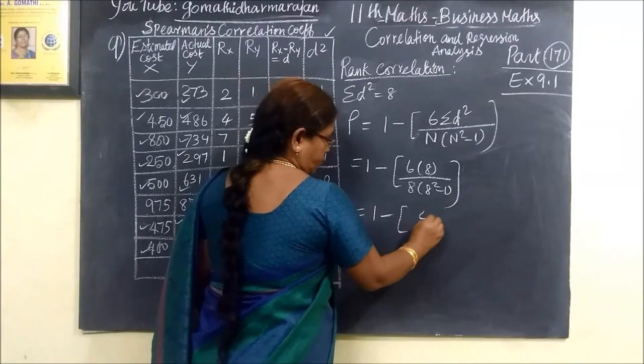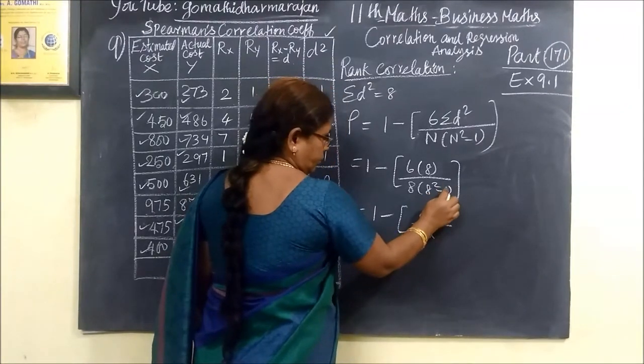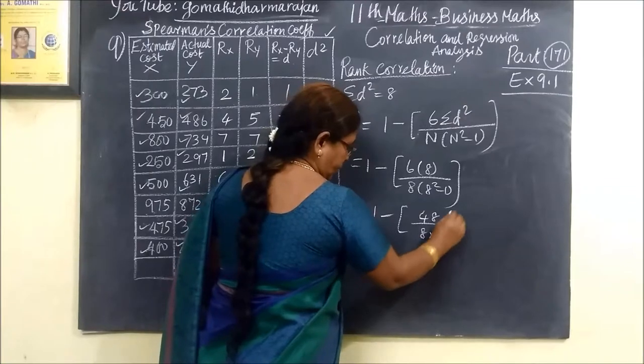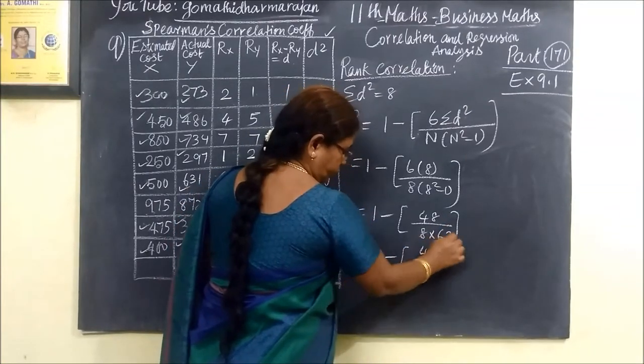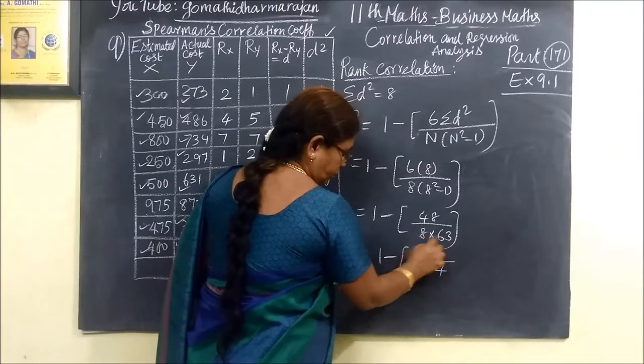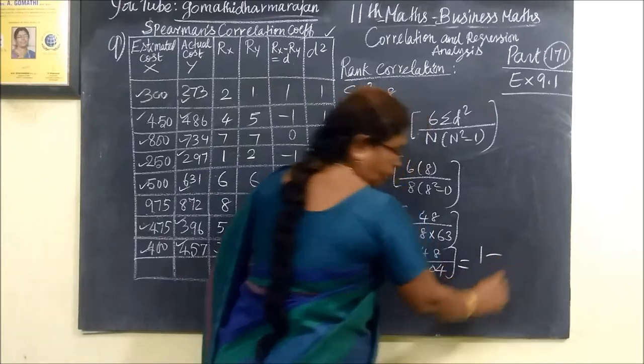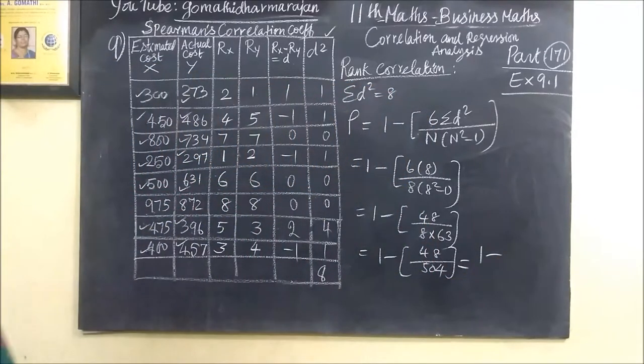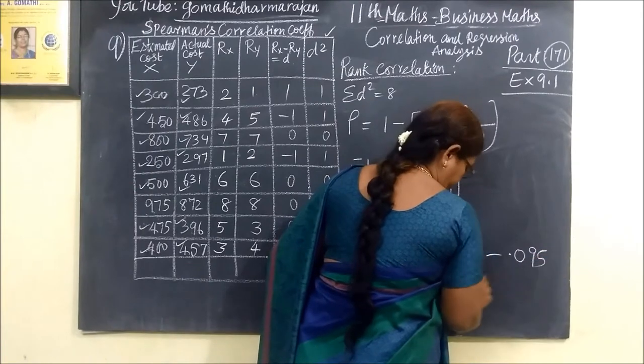So 1 minus 48 by 8 into 63. So 1 minus 48. That is 2. Then 504. So for this you are writing 1 minus, okay? 6 equals 6 times 0.95, 0.095. The minus you are getting 1, 0...